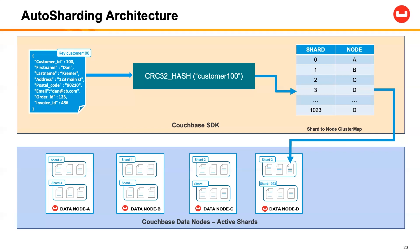Because of this, the Couchbase SDK is essentially an intelligent client in the sense that whenever the application is doing a get operation, the cluster map knows exactly where the key resides. It will get the data exactly from the specific node, because the cluster map knows which node to retrieve from. This gives us a very performant operation in the sub-millisecond range, even to the microseconds, and we get an evenly distributed dataset with no hotspots.